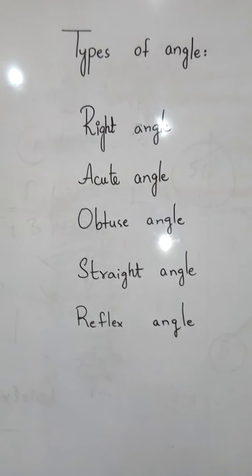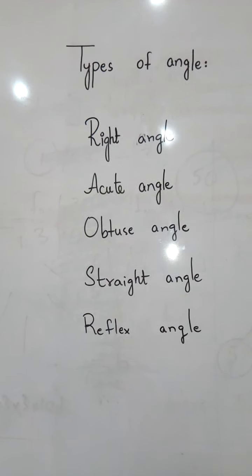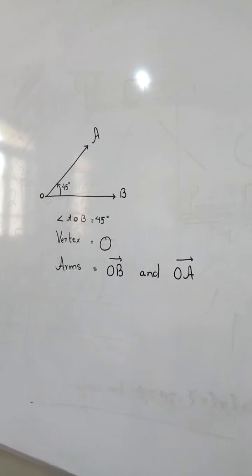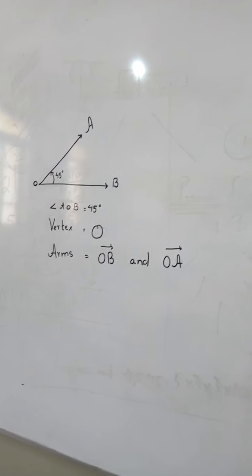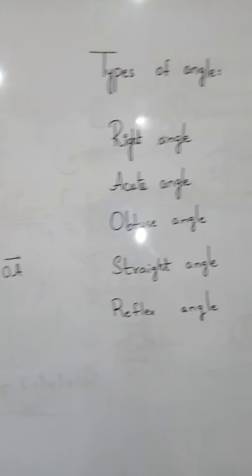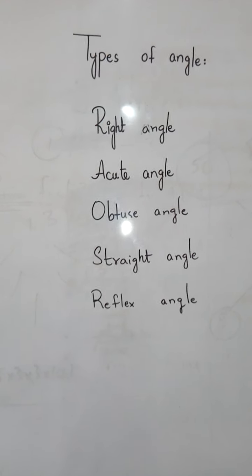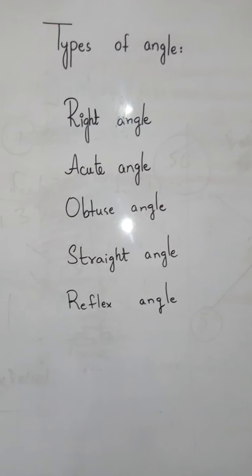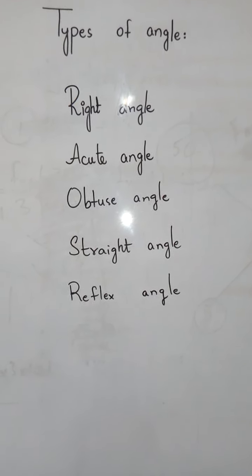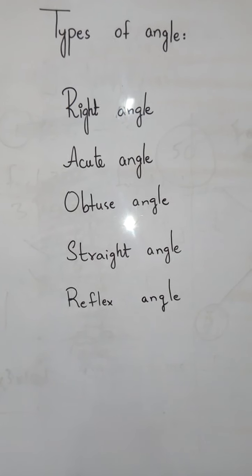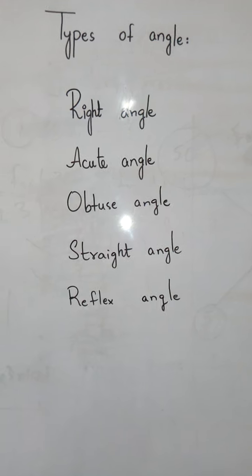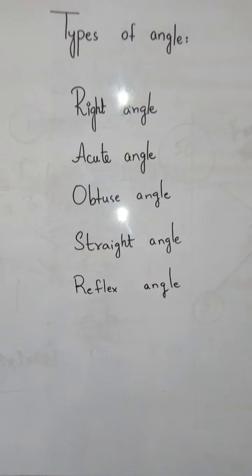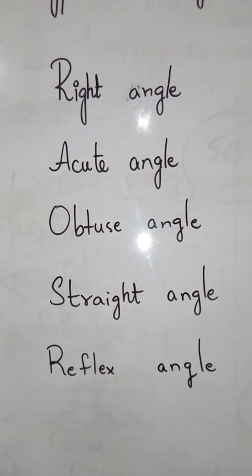After learning what an angle is, how an angle is made, what the parts of an angle are, and how to label an angle, the next topic is the types of angles. In the syllabus, there are five types of angles: right angle, acute angle, obtuse angle, straight angle, and reflex angle. You have to draw these angles and know how to recognize them without using any instrument.